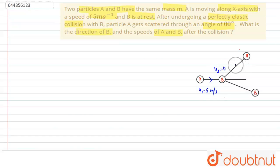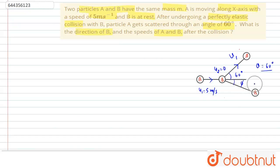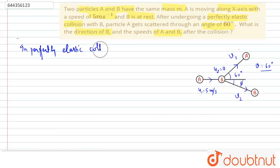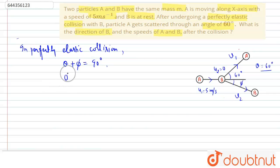U2 is 0. After collision, particle A moves at an angle of 60 degrees — that is the angle of scattering, theta equals 60 degrees — with velocity V1. We have to calculate the angle of recoil phi, and let the speed of B after collision be V2. In a perfectly elastic collision, the angle of recoil plus angle of scattering, that is theta plus phi, equals 90 degrees. Using this relation, phi equals 90 minus theta, which is 90 minus 60 equals 30 degrees.